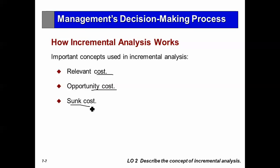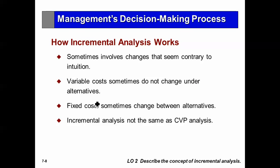An opportunity cost is not really a cost — it's an opportunity to earn revenue that you forego, and therefore it becomes a cost. A sunk cost is a cost that has happened in the past. It's like the Titanic — it's sunk, at the bottom of the ocean, you can't recover any of those costs. In incremental analysis, variable costs sometimes change but sometimes do not change under the alternative, and the same applies to fixed costs. You have to analyze every situation for relevant costs and revenues — you can't just categorize them and say variable costs will always change and fixed costs will not.